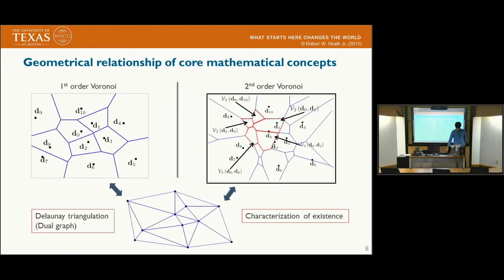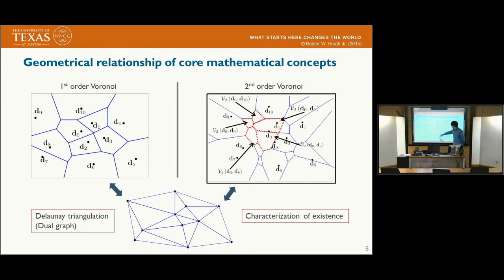The key idea of the proposed method is exploiting the geometrical relationship between the Voronoi tessellations and the Delaunay triangulations. Briefly speaking, the Delaunay triangulation is a dual graph of the first-order Voronoi cells, and edge adjacency can characterize the existence of the second-order Voronoi cell. For example, if these two vertices have a connection in the Delaunay triangulation graph, the second-order Voronoi region associated with these two points is not empty.